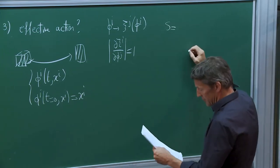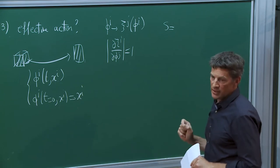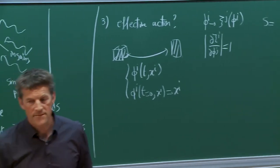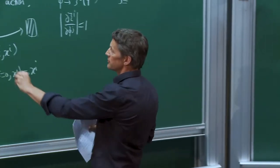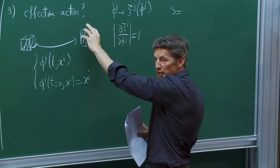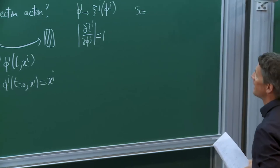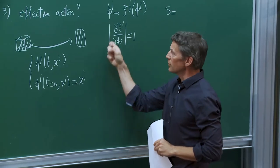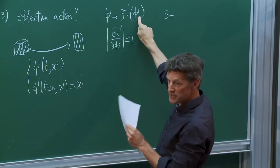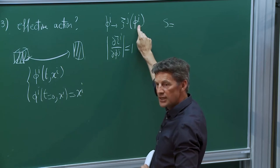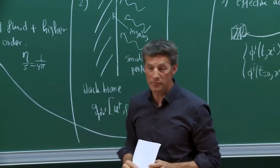To write down an effective action for these scalar fields, you need to know the symmetries. The theory is invariant under volume-preserving diffeomorphisms of the phi^i's — the statement that the only thing that matters of this little piece of fluid is its local volume, but how you exactly parameterize the volume is not important. The idea is to try to write down an effective action for these fields phi^i that has this particular symmetry. It's a global symmetry — an infinite-dimensional symmetry — like diffeomorphism invariance in the target space of a sigma model.